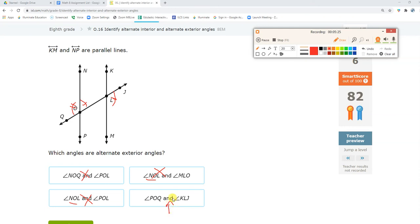I know this is the only one left, but I'm going to check it. Angle POQ. Alternate exterior with angle KLJ. That's it right there.